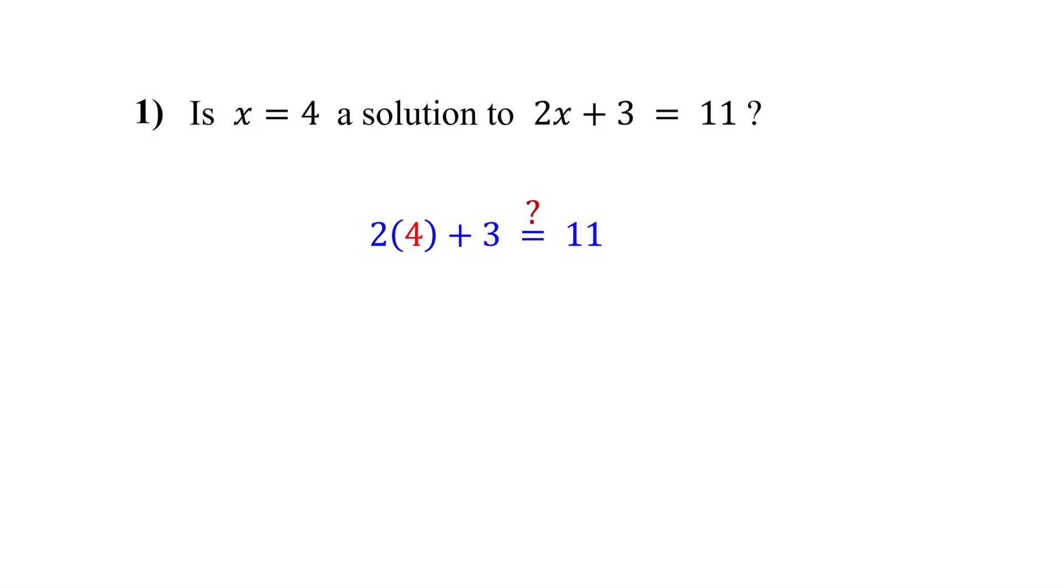First, substitute 4 for x in the equation. Then simplify. On the left side, 2 times 4 is 8, and 8 plus 3 is 11. Since both sides are equal, x equals 4 is a solution to the equation.